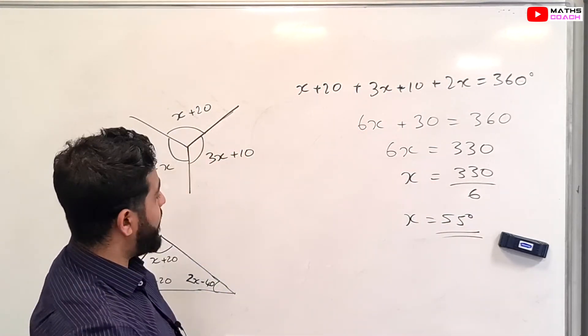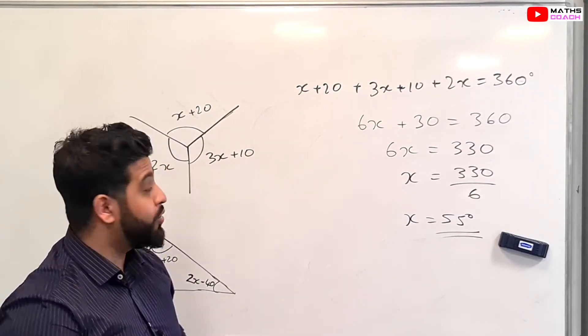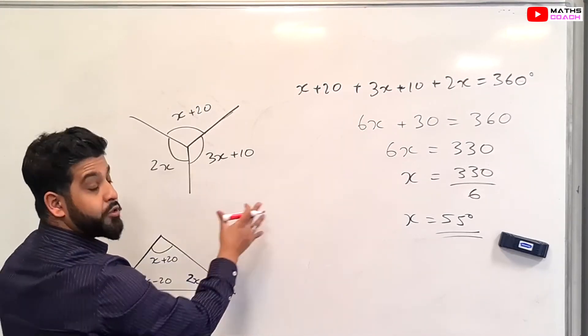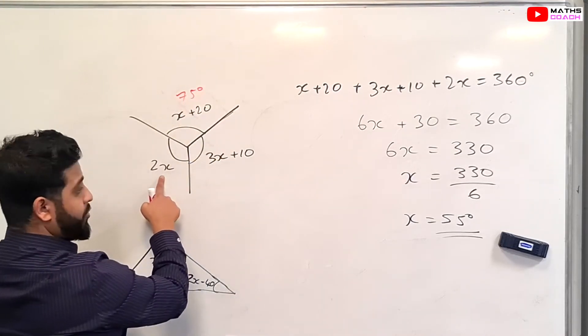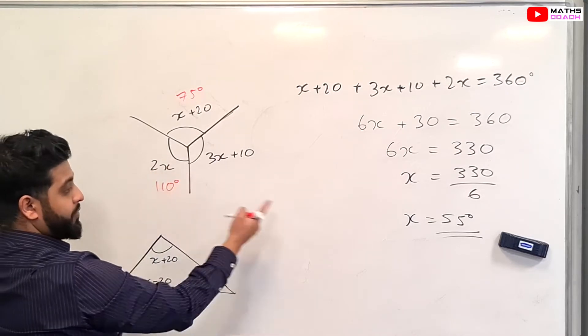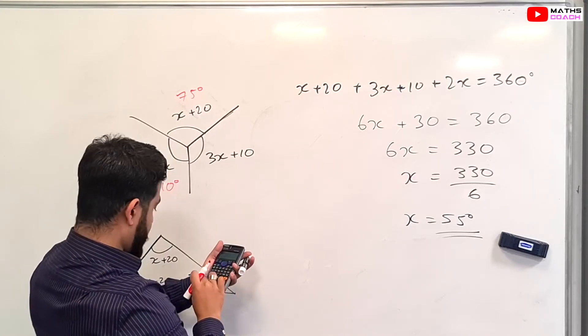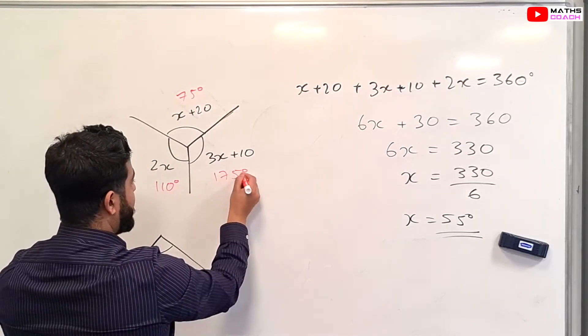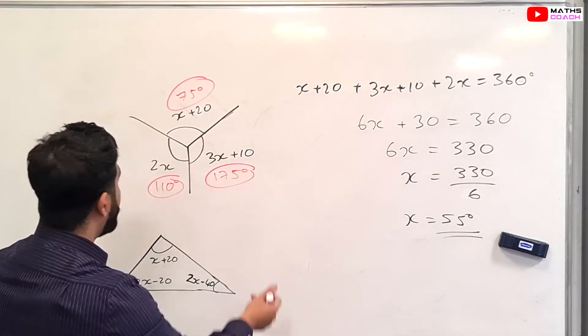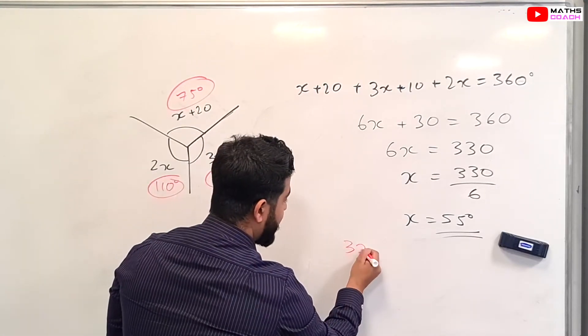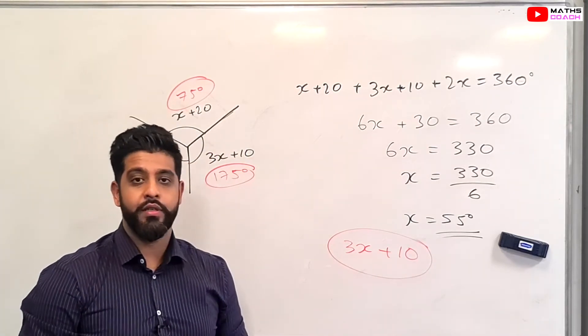So we know that X is 55 degrees. Now sometimes in a question, you might be asked to find the smallest or largest angle. The way to do that is to substitute all the values back in. You get 55 plus 20, which is 75 degrees. Here you get 110 degrees, because 2 times 55 is 110. And here 3 times 55 is 175. So the largest angle here is clearly 175, which is 3X plus 10.